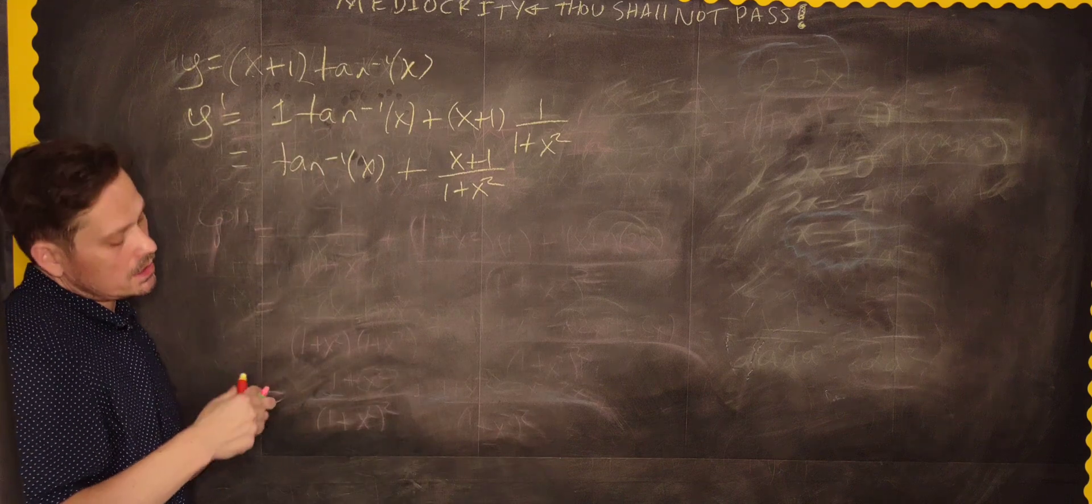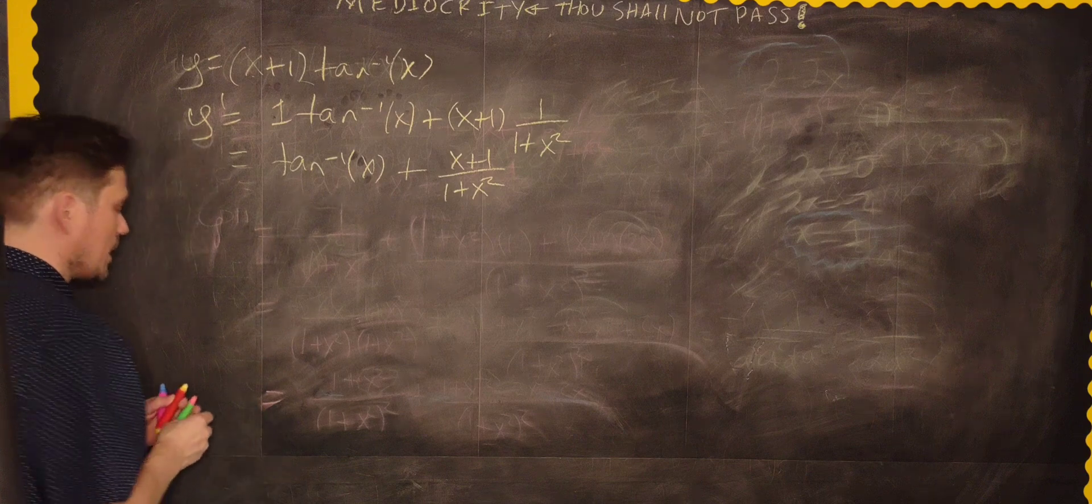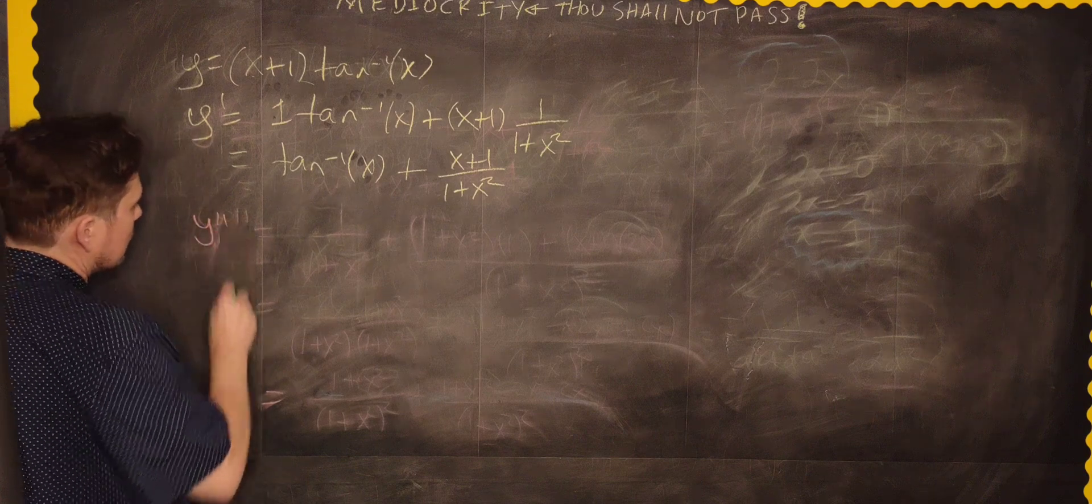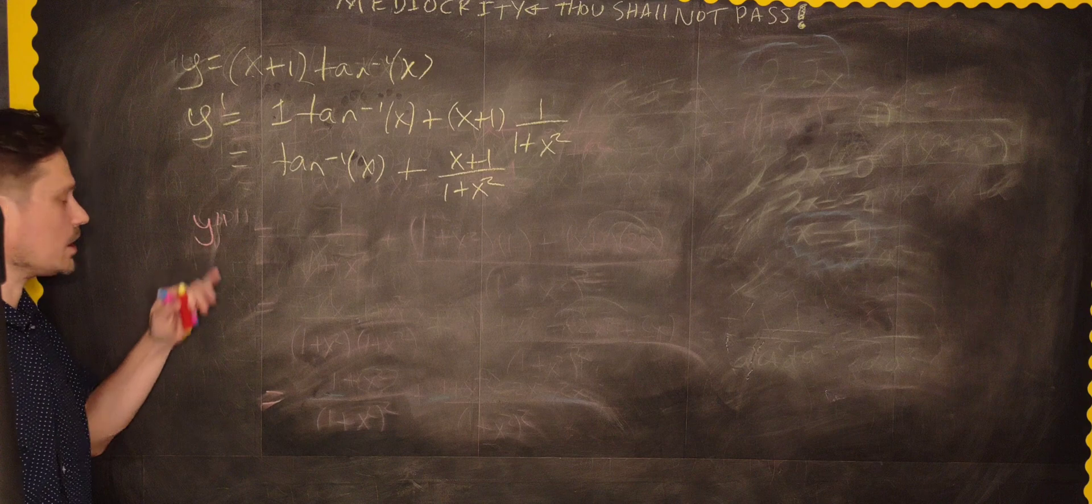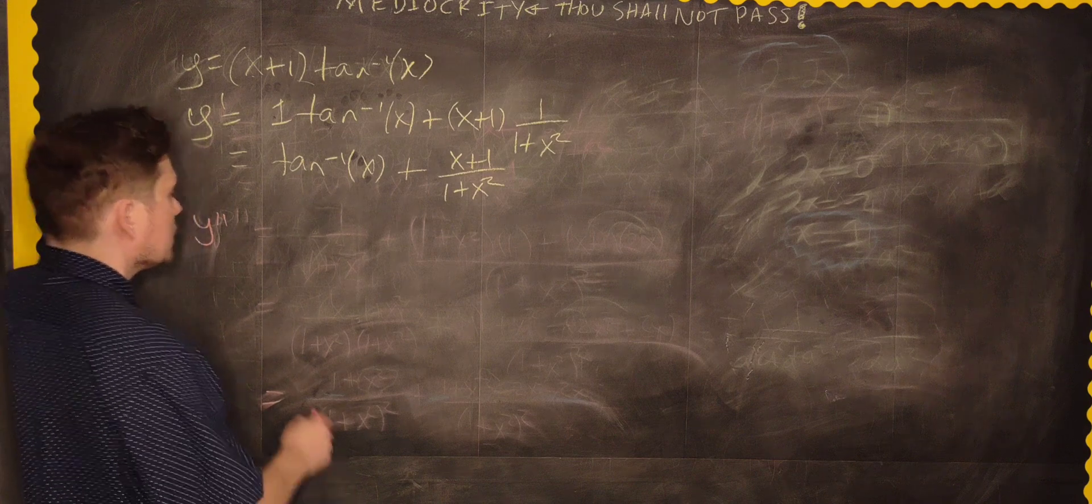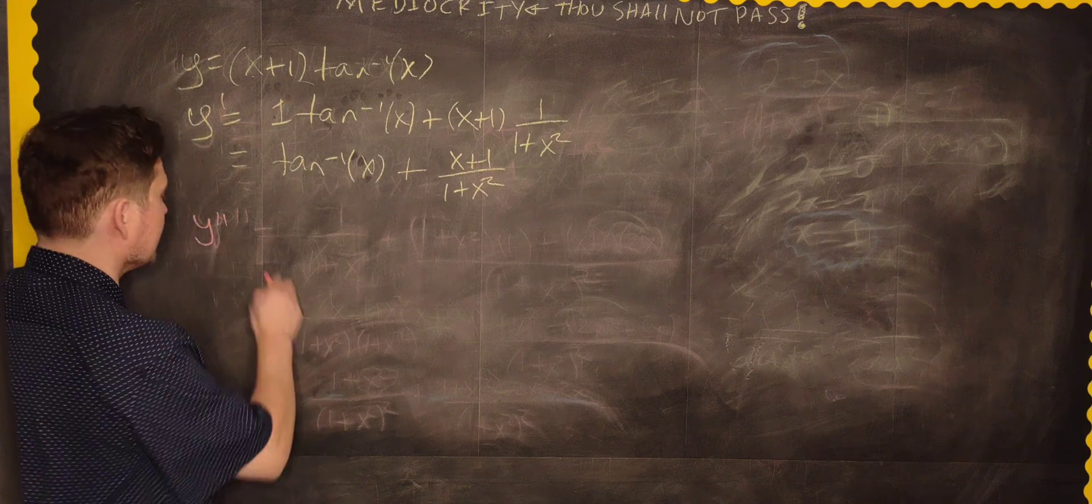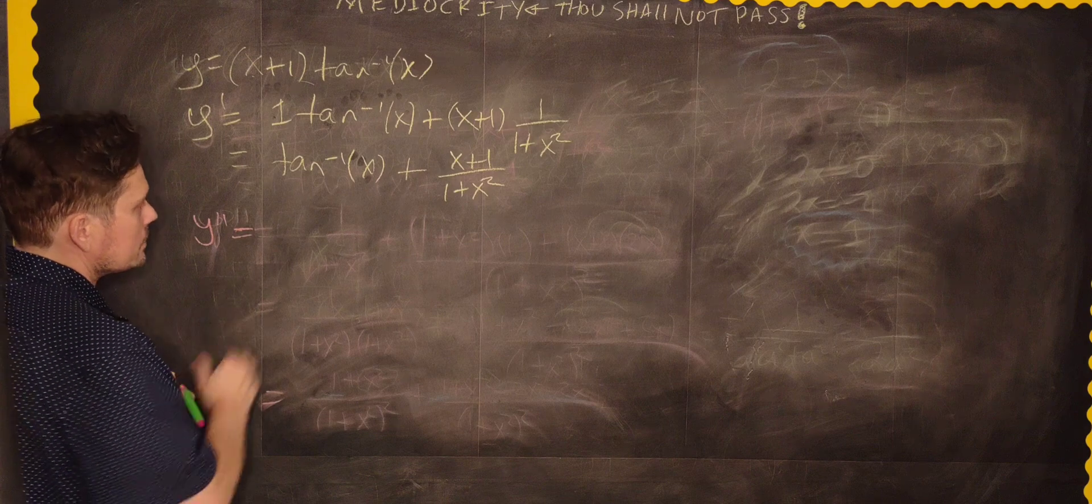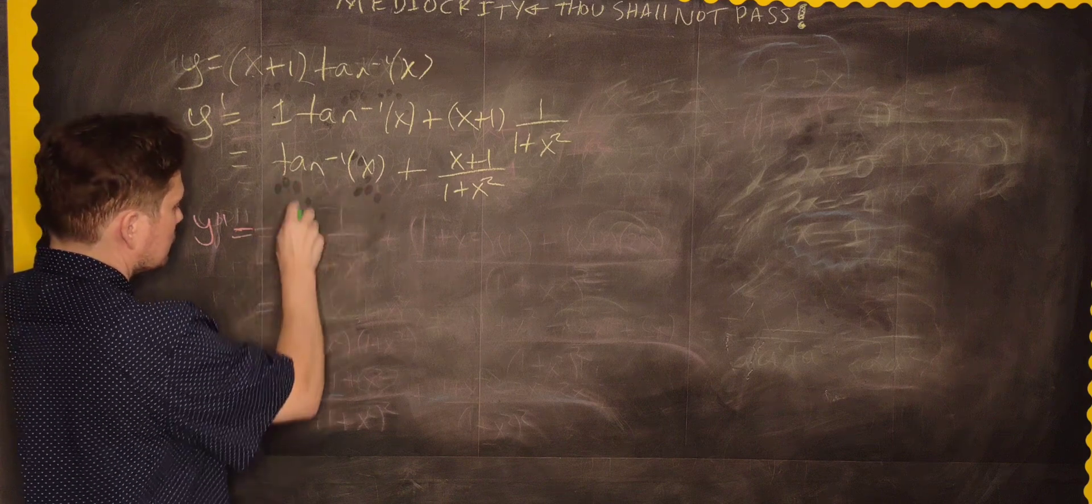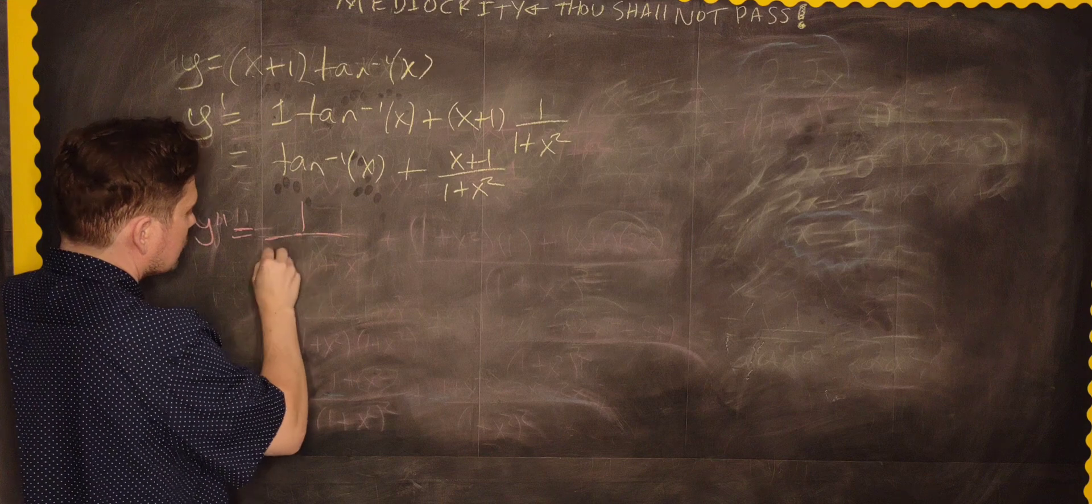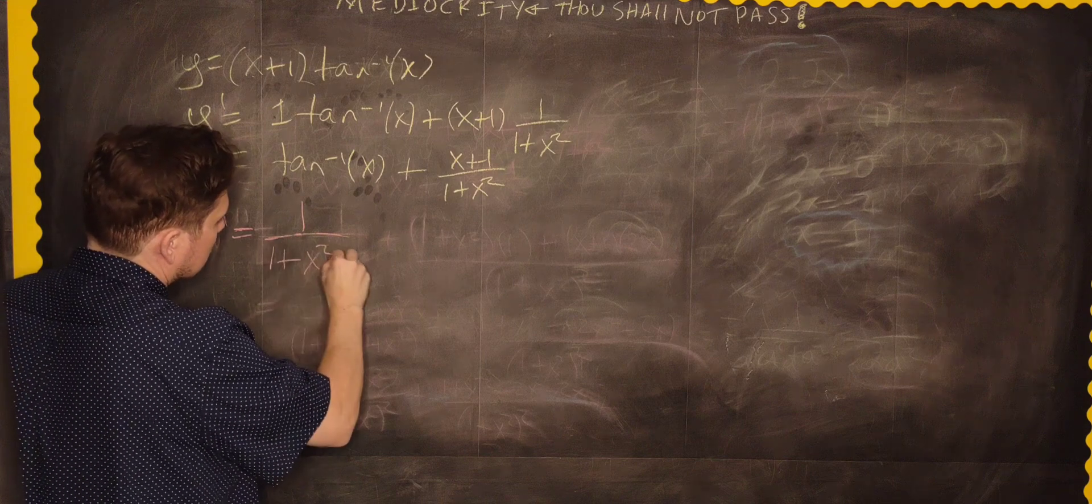Now we've got to differentiate this baby again. So y double prime is what we are going to find. Let's go through the process. This derivative is simple, it's a cookbook approach on that one. So 1 over 1 plus x squared.